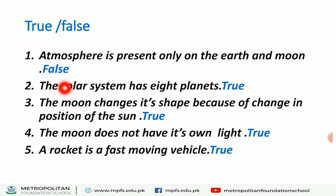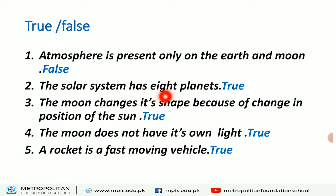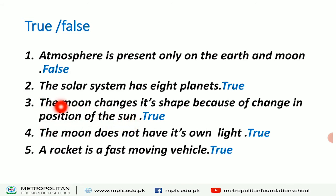Why is it false? Because atmosphere is present only on the Earth, not on the Moon. The statement is true that atmosphere is present only on Earth, but they added the Moon — that's why it is false. Second statement: 'The solar system has 8 planets.' This statement is true because we know all 8 planets — Mercury, Venus, Earth, Mars, Jupiter, Saturn, Uranus, Neptune.